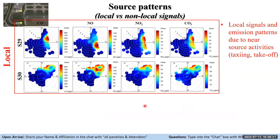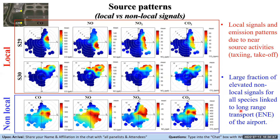Once you've disaggregated the signal, you can look at how the local and non-local fractions pattern relative to nearby emissions. Taking two receptor points at the end of the runway, clear patterns emerge — a mirror image as expected. Some fractions are coming from taxiing and takeoff as previously discussed. The profile of the non-local signal is quite different from the local fractions. We've combined the large-scale meteorology from London Heathrow with the non-local signal, and we see a large fraction of elevated non-local signal linked to long-range transport coming from the east to northeast direction.